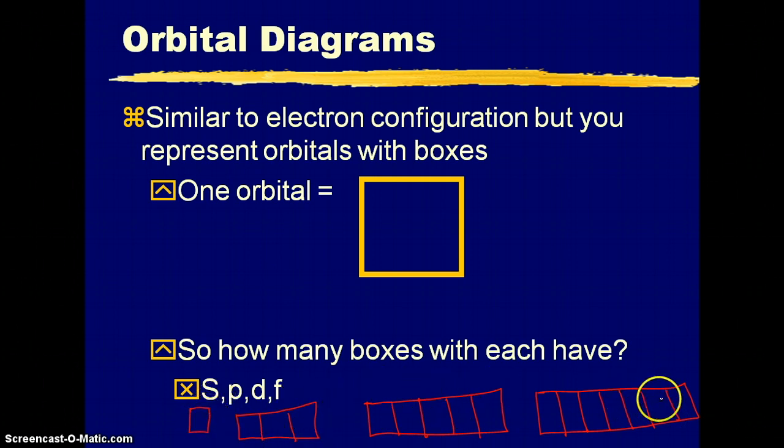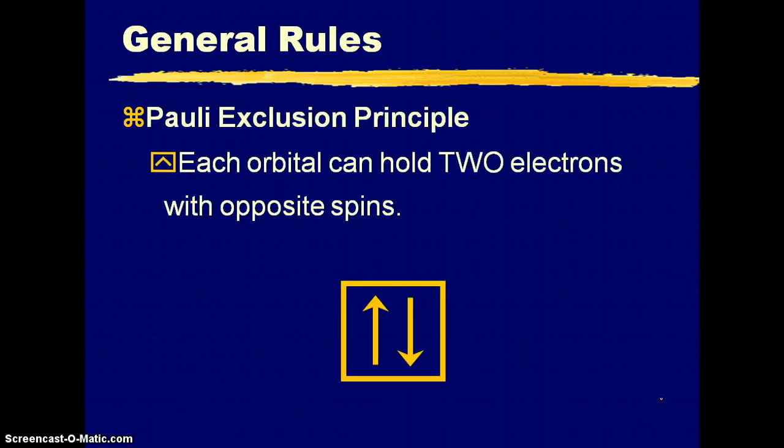So those are S, P, D, and F boxes. Now we're just drawing it out. We're going to make sure that we indicate our electrons with arrows. So the arrow is the electron.